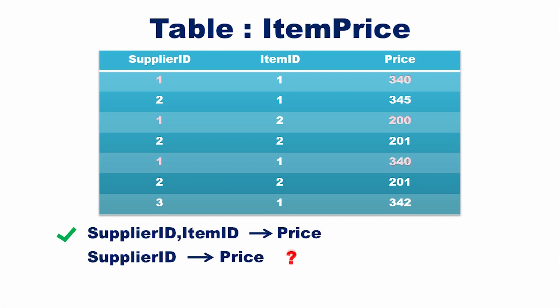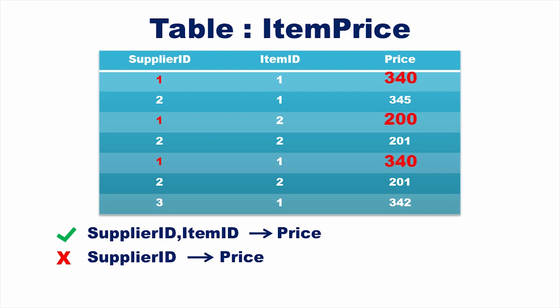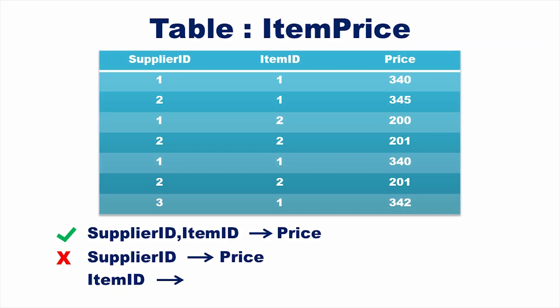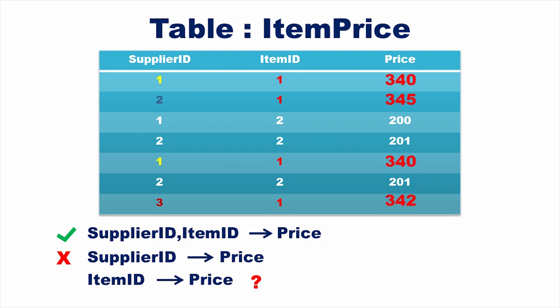Take supplier ID 1 — it has three different prices. That means supplier ID does not uniquely determine price. Now check whether item ID alone determines price. The price of an item is different for different suppliers; item number one has two different prices for two different suppliers. That means item ID does not functionally determine price.